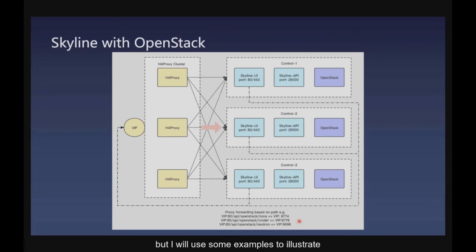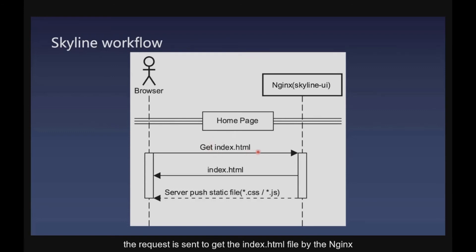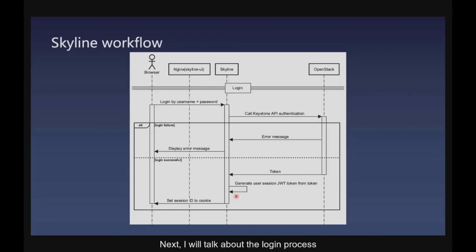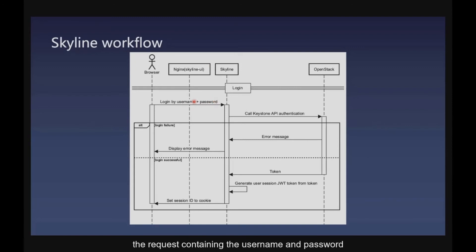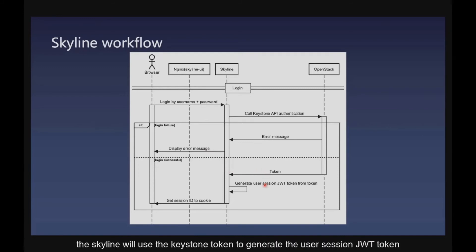Let's look at a static example. When a user accesses the home page, the request is sent to get the index.html file via Nginx, and Nginx will directly return the index.html and other static files. Next, the login process: the request containing the username and password is received by Skyline and forwarded to OpenStack Keystone for authentication. If authentication fails, an error will be returned and the browser will display an error message.